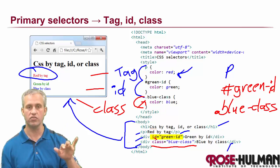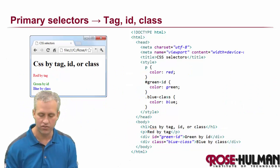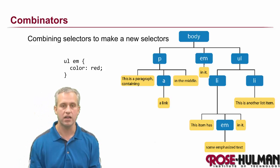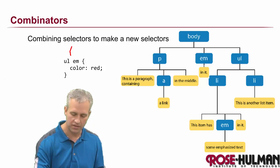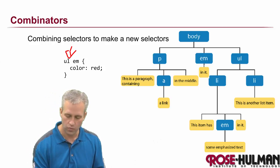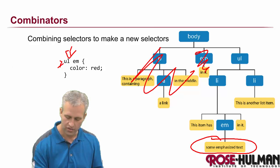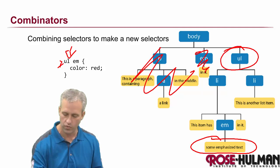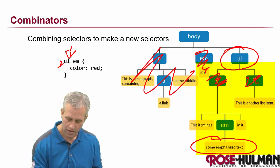In addition to tag, ID, and class, there are also different combinators. So combinators are a way to combine two selectors and make them into one selector. The most common combinator is a single space. So this says look for ULs, and then within the ULs, look for the EMs. What it does is it finds a hit for the first one — it finds a UL — and then it only looks in its children for an EM. So that EM inside the UL gets the color red.